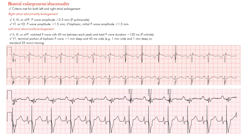Biatrial enlargement means that the criteria for both left and right atrial enlargement are met. So if a patient has right atrial enlargement, left atrial enlargement, or the combination, we're ensuring that both of these processes are satisfied.